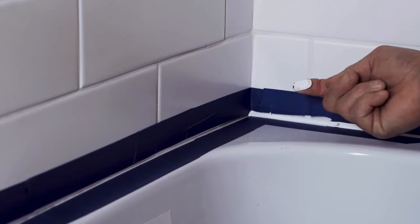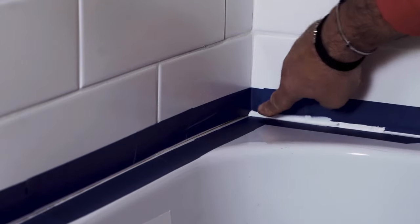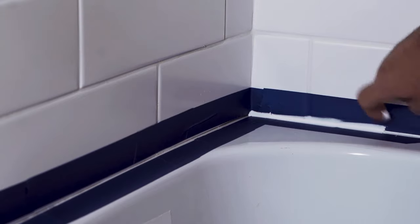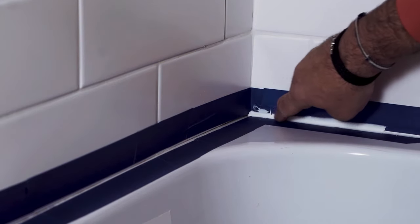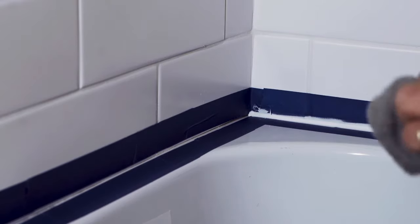And the excess there on your finger, you're going to wipe onto the wet rag and then continue to pull that across so you get a nice smooth finish. And you're going to work your way around the entire perimeter of the tub.